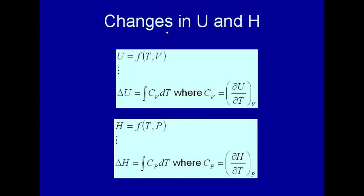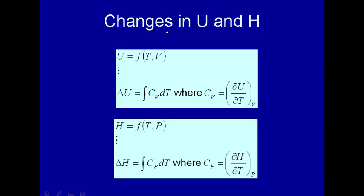In fact, what we're going to show is that delta U is just the integral of heat capacity dT, and the same way with delta H — the integral of heat capacity. But now we're going to define two kinds of heat capacity: one at constant volume and one at constant pressure.